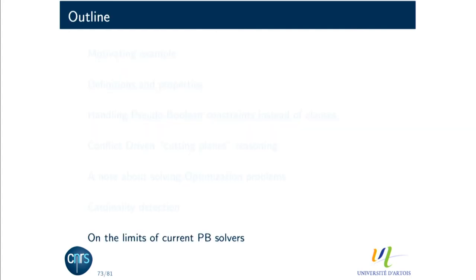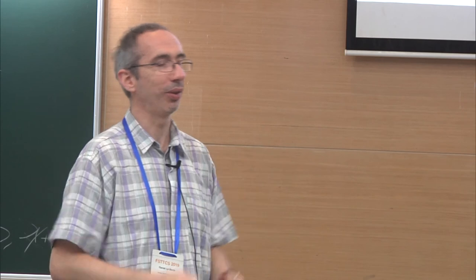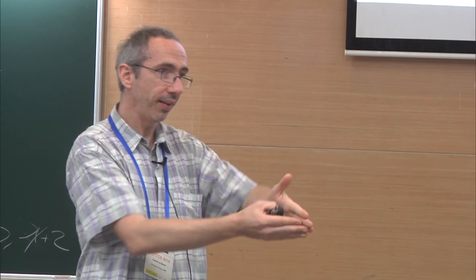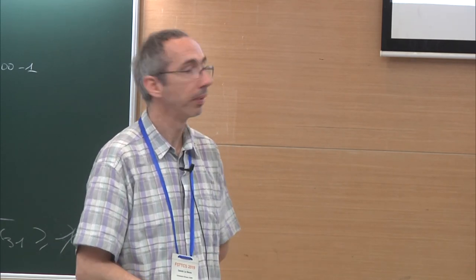The same idea could work for pseudo-Boolean constraints or XOR constraints — you only rely on the fact that when you propagate something, you take the intersection of the propagations. You could use whatever constraints you want. However, if you already have cardinality constraints, propagation on PB constraints is much slower, so this makes more sense for clause-level detection where propagation is fast.